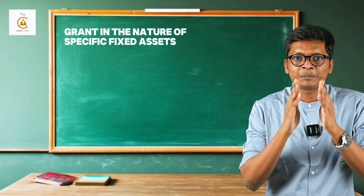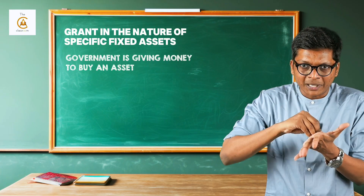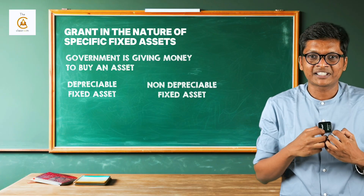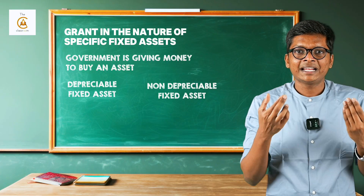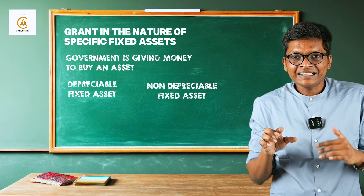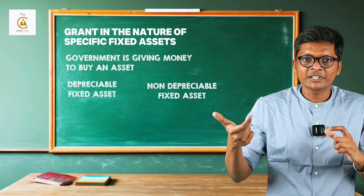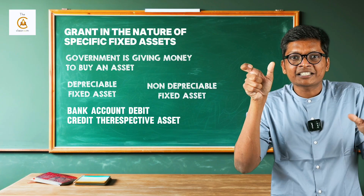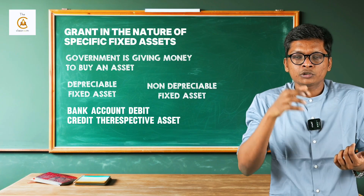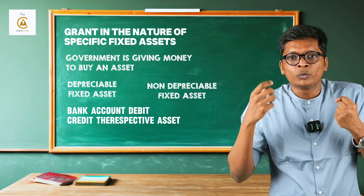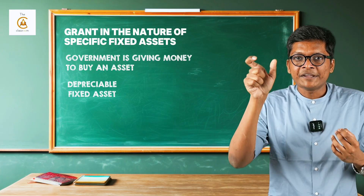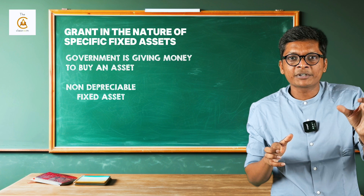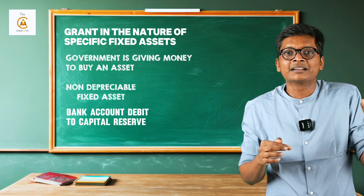For grants in the nature of specific fixed assets, where government gives money to buy an asset, these are classified into depreciable fixed assets and non-depreciable fixed assets. First entry when buying the asset is: asset account debit to bank. Second entry when receiving the grant - whether depreciable or non-depreciable - bank account debit, credit the respective asset, because you got money from government to buy the asset. So entry is bank to asset, and the asset value will reduce.